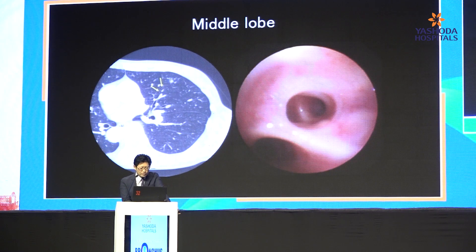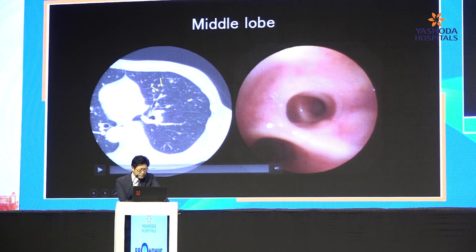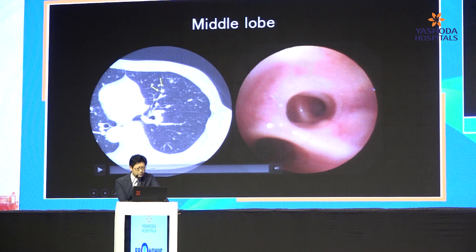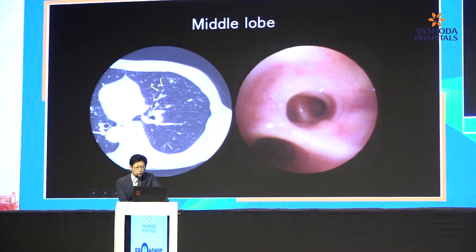Here you can see the target nodule in this patient. This is the other branches — this goes to the inferior side, and this goes to the left side. So in this horizontal inversion view, you can approach this correct bronchus.